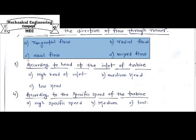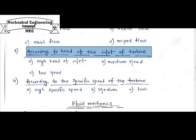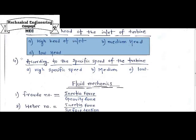The third type is classification according to the head at the inlet of the turbine. Different types of head ranges exist at the inlet, and there are three basic types: high head at inlet, medium head at inlet, and low head at inlet.